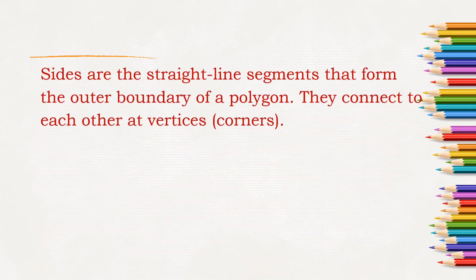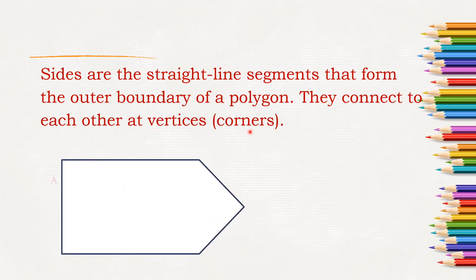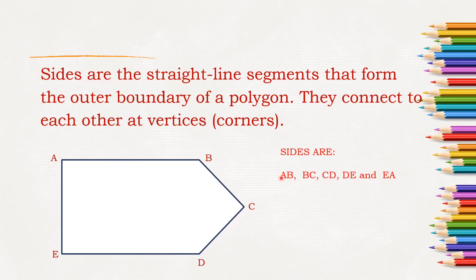Next, what are sides? Sides are the straight line segments that form the outer boundary of a polygon. They connect to each other at vertices, which means corners. Here, AB is a line segment and it is a side. BC is a line segment and it is a side of the polygon. CD is a line segment and it is a side of the given polygon. The sides are line segments AB, BC, CD, DE, and EA.